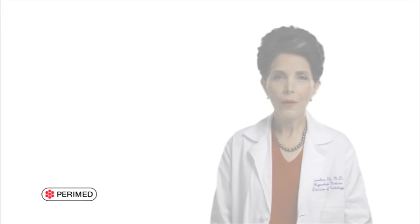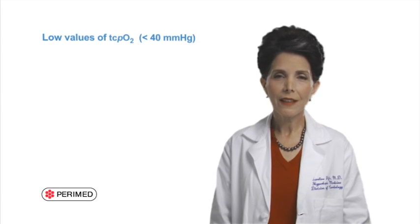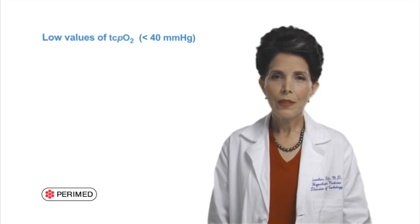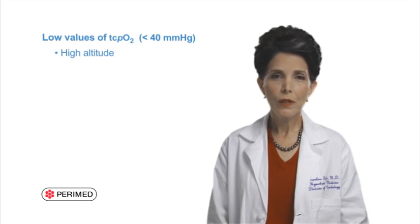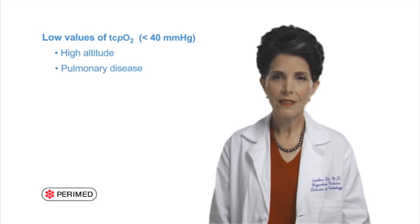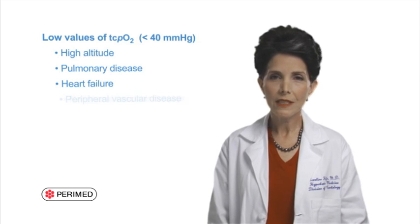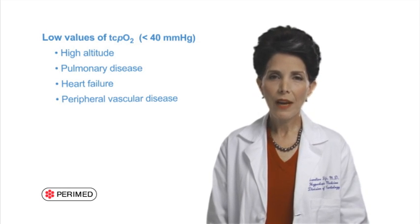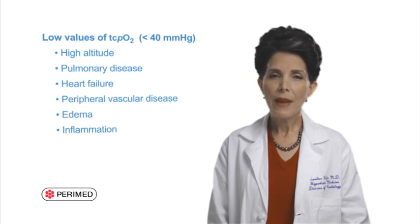It is important to know that a low value could have other causes besides vascular disease. For example, the patient's inspired PO2 could be low, perhaps because they live at altitude, or their arterial PO2 could be low due to pulmonary disease. They might have a poor oxygen delivery mechanism due to heart failure or peripheral vascular disease. Or lastly, they may have a barrier to oxygen diffusion to the electrode due to edema or inflammation. A best practice suggestion is to check the patient's oxygen saturation using pulse oximetry to ensure that arterial hypoxemia is not the reason for a low TCPO2 reading.